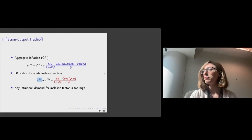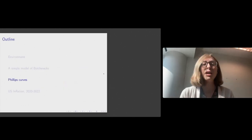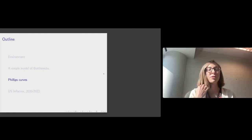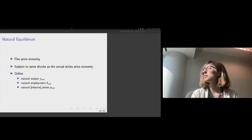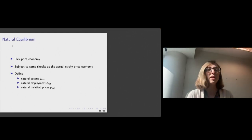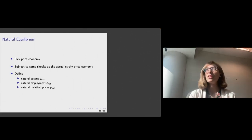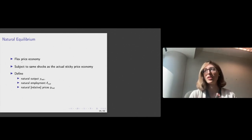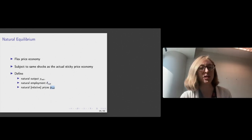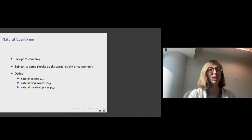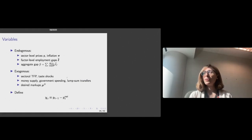To generalize this argument to the overall economy and construct an inflation decomposition, a key definition is the natural equilibrium — what determines potential output and the output gap. The natural equilibrium is a flex-price economy subject to all the same shocks as the actual sticky-price economy. Natural output, natural employment of each primary factor, and natural relative prices are what would prevail in this flex-price economy subject to the same shocks.